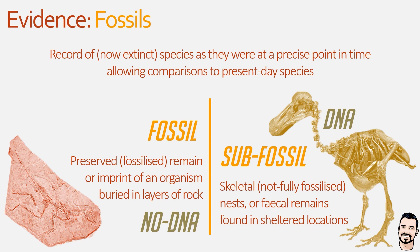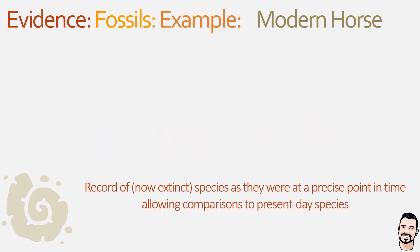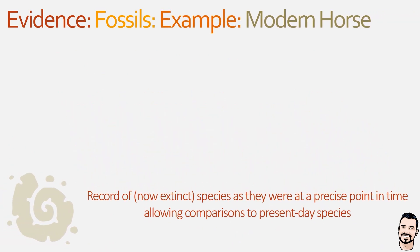We can use these different types of fossils as evidence for evolution, as they help to show which species have become extinct, the potential origins of new species, and evolutionary changes in groups of organisms over time. For example, the evolution of the modern horse took around 57 million years as various aspects changed.